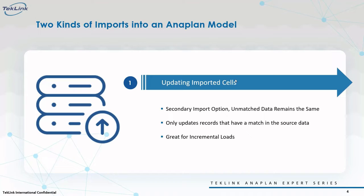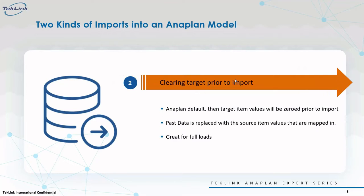The first option is to only update imported cells. This import process will only update an existing target item value if there's a matching source item mapped to it. This is great for incremental or delta loads because only changed data is updated, and data for existing but unmatched records remains the same. The Anaplan default option is clearing the target module prior to import, which zeros out target items before import, replacing past data with source item values that are mapped in, while unmapped items remain zeroed out. This is excellent for full loads where maximum accuracy is of the utmost importance.